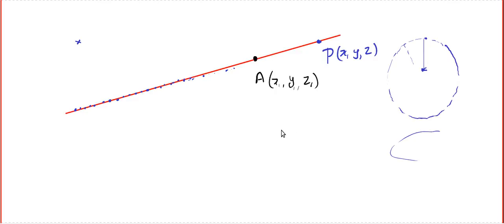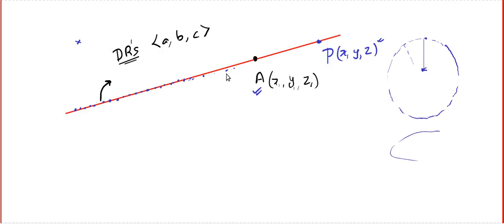What are the given things? You are given a fixed point, and then we take the locus point — meaning we are considering all the points on the line. In lesson 1, we learned that every line corresponds to direction ratios, direction cosines, etc. For now, assume we know the direction ratios of the line and call them A, B, C. These are the things that should be given if you want to write the equation of a line in Cartesian form.